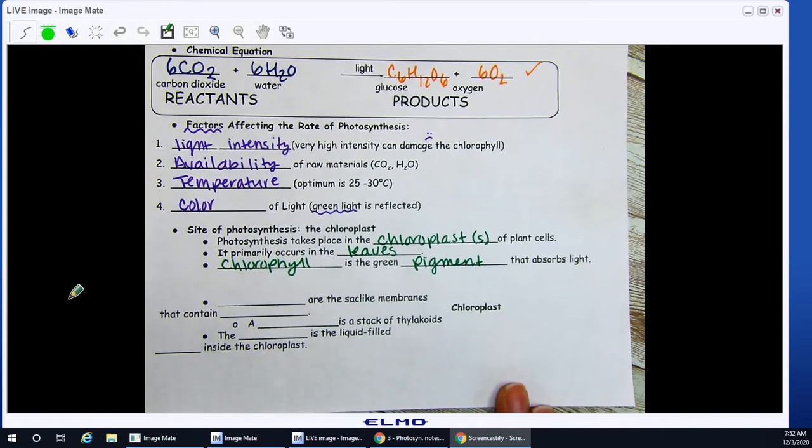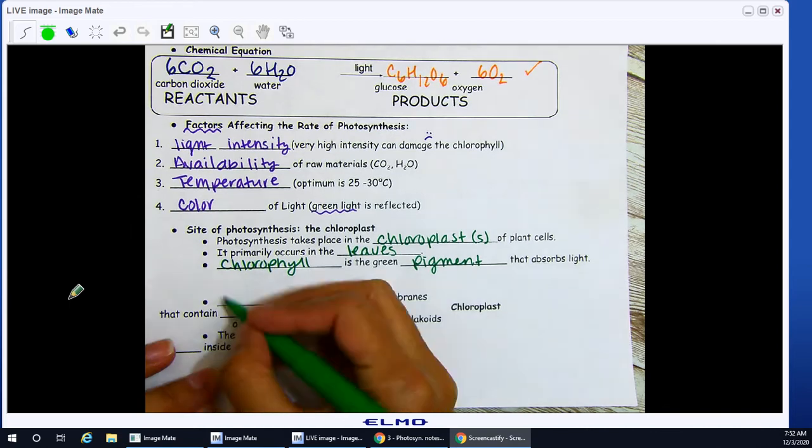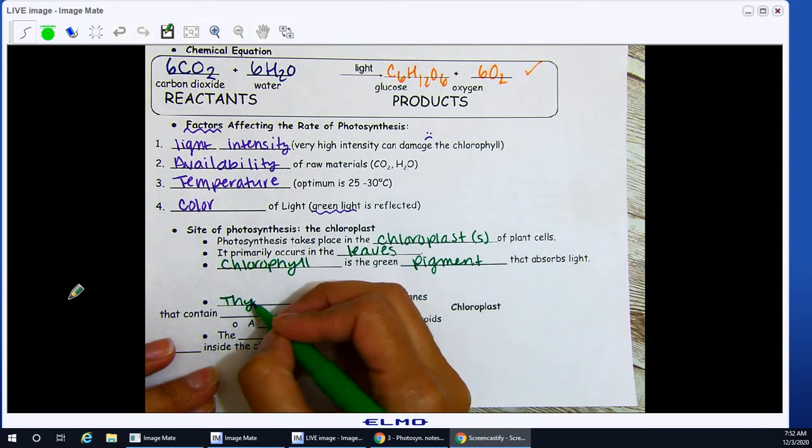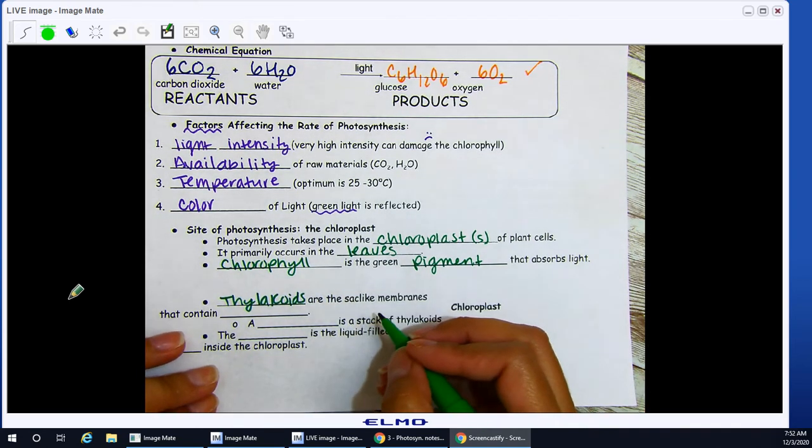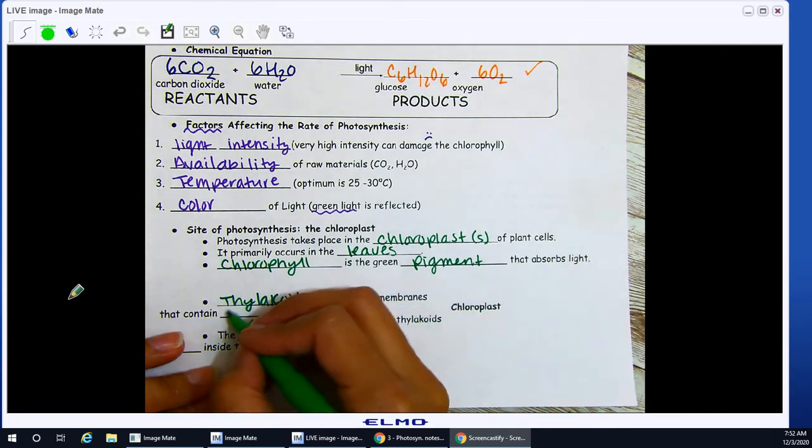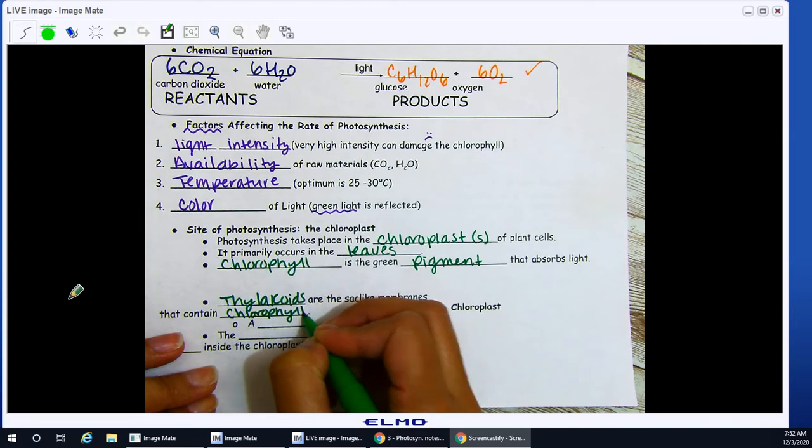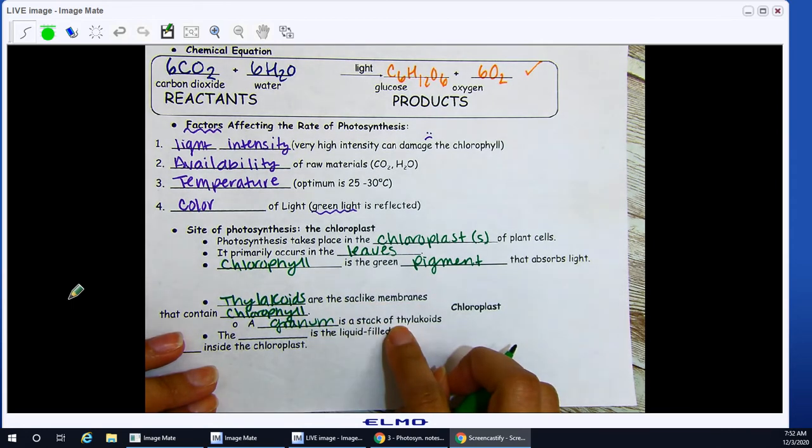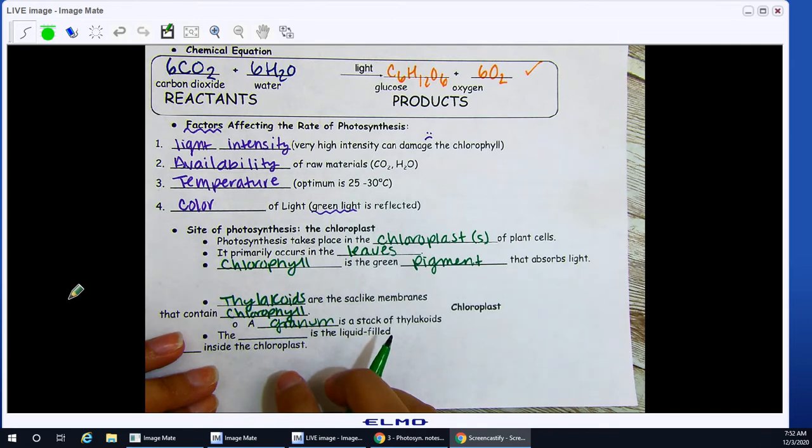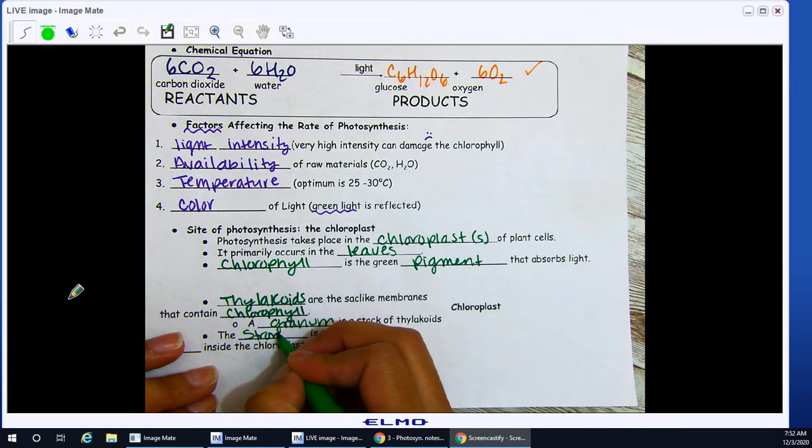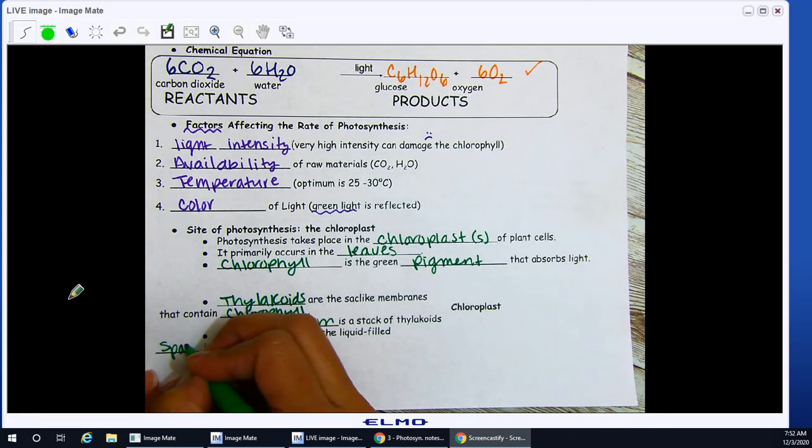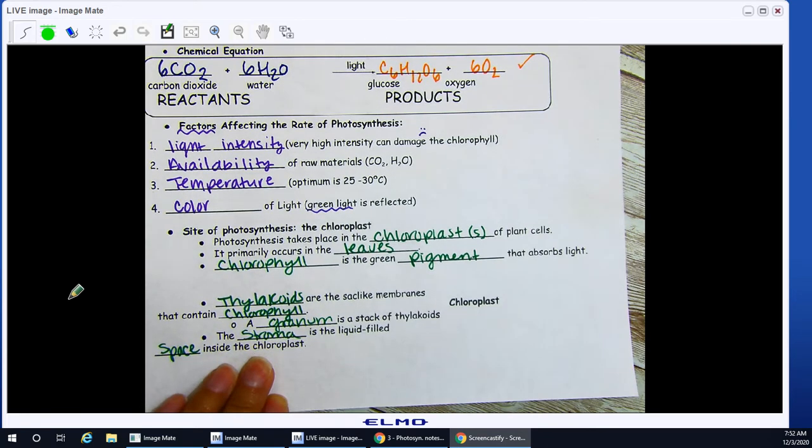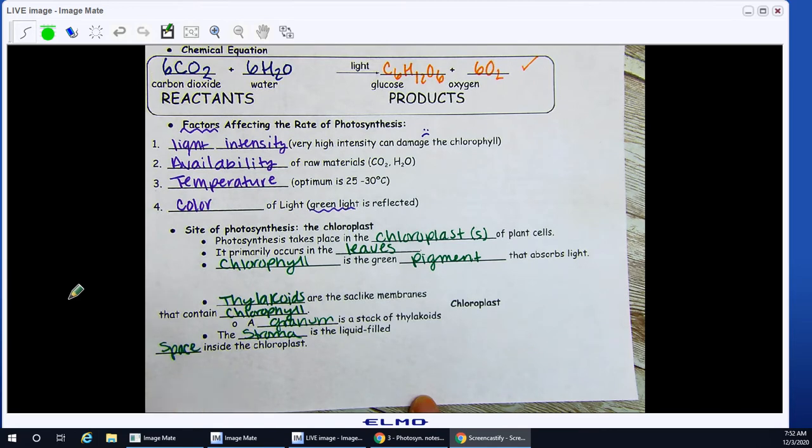Chlorophyll has two L's. Thylakoids are the sac-like membranes that contain chlorophyll. So, a granum is a stack of thylakoids. The stroma is the liquid-filled space inside the chloroplast. So, much like a cytoplasm, stroma is the liquid-filled space inside a chloroplast.